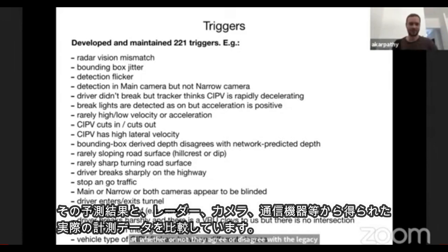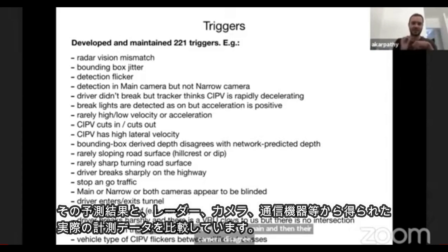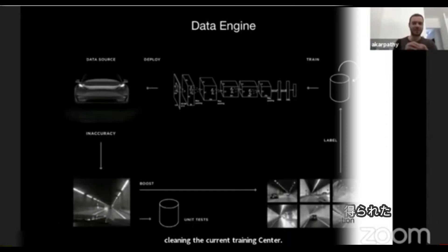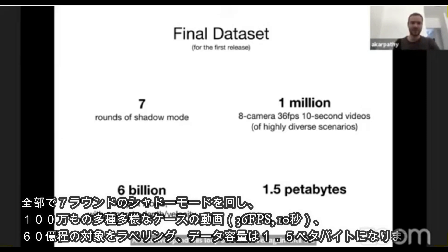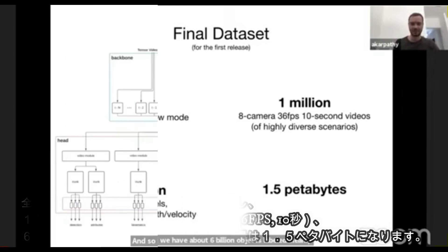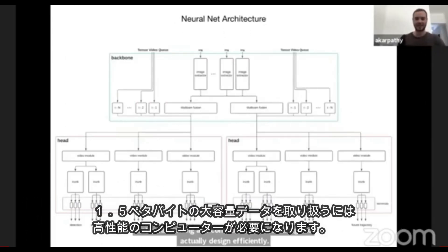We also look for other sources of jank — like bounding box jitter, detection jitter, disagreement between the main and narrow cameras, or cases where we predict a harshly decelerating object but the driver doesn't react. In total we've done seven rounds of shadow mode for this release, accumulating one million extremely hard and diverse clips at roughly 10 seconds each at 36 fps. In total, about 6 billion objects are labeled cleanly for depth and velocity, taking up roughly 1.5 petabytes.